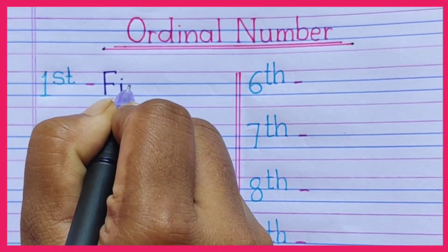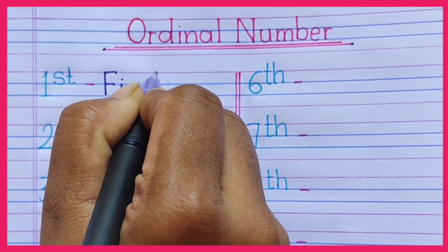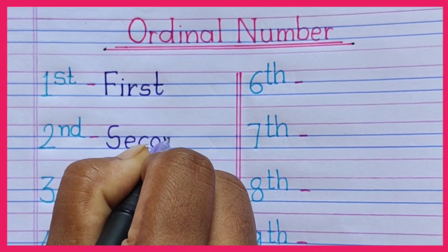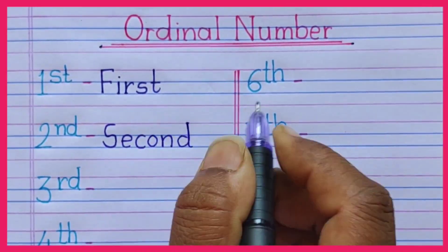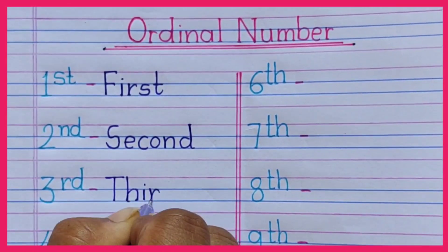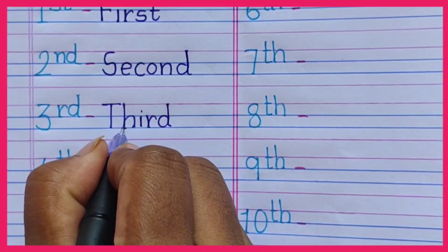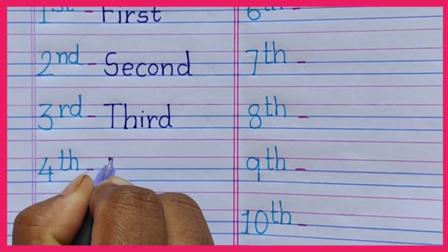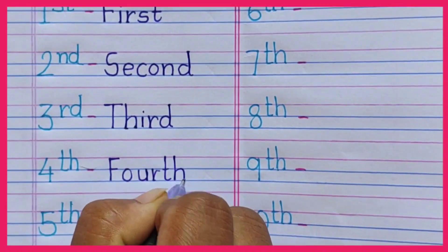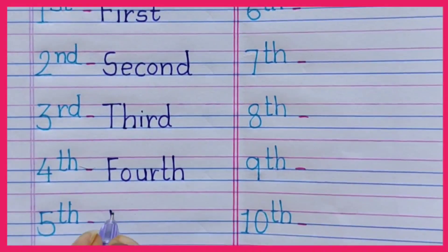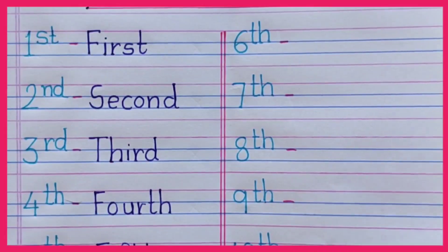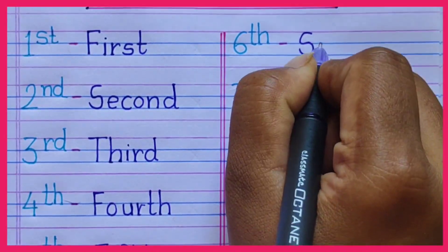First: F-I-R-S-T, first. Second: S-E-C-O-N-D, second. Third: T-H-I-R-D, third. Fourth: F-O-U-R-T-H, fourth. Fifth: F-I-F-T-H, fifth.